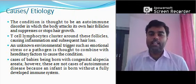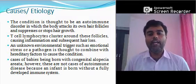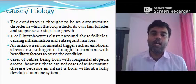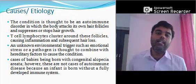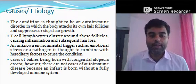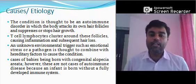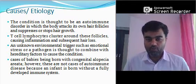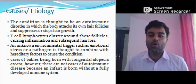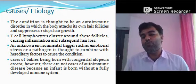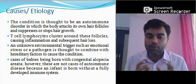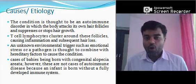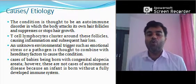Causes, or etiology: the condition is thought to be an autoimmune disorder — there is no perfect proven reason. It can happen to anyone. The body attacks its own hair follicles and suppresses or stops hair growth. T-cell lymphocytes cluster around these follicles causing inflammation and subsequent hair loss. An unknown environmental trigger such as emotional stress or a pathogen is thought to combine with hereditary factors to cause this condition.